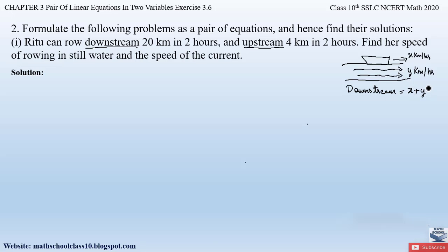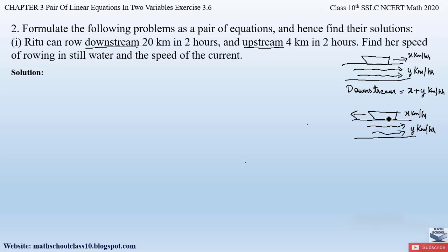In upstream, the water is flowing in one direction but the boat moves in the opposite direction. If the boat moves at x km/h and water flows at y km/h, the current opposes the boat, adding resistance and reducing its speed. Therefore, in upstream the speed of the boat becomes x minus y kilometers per hour.